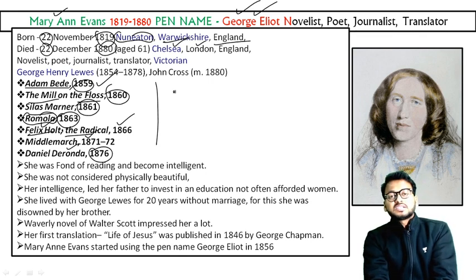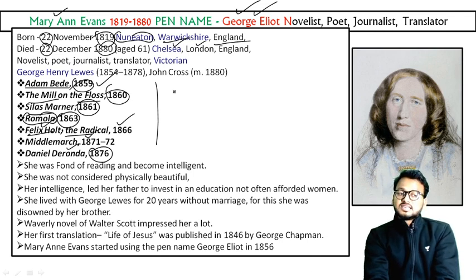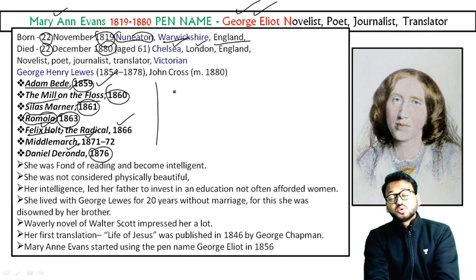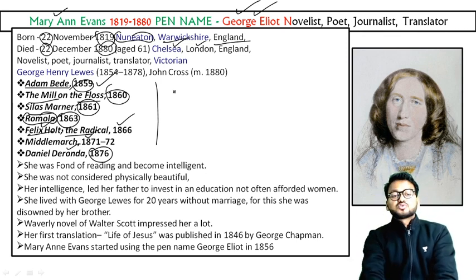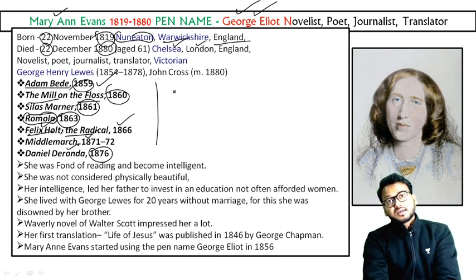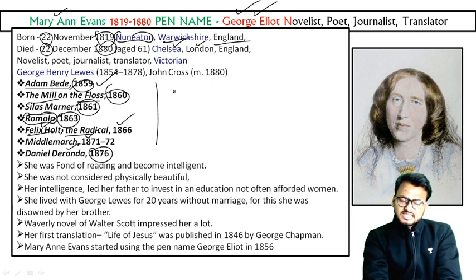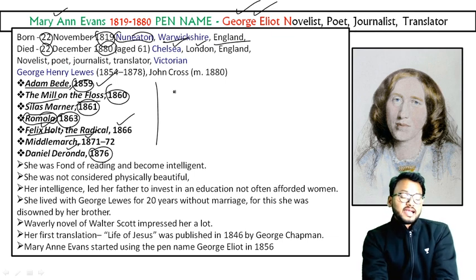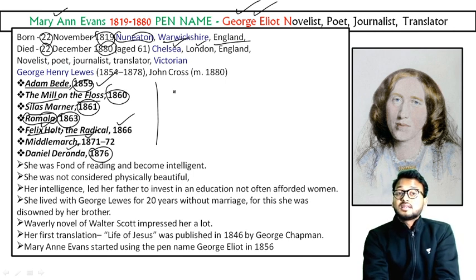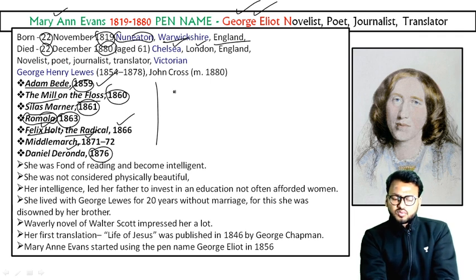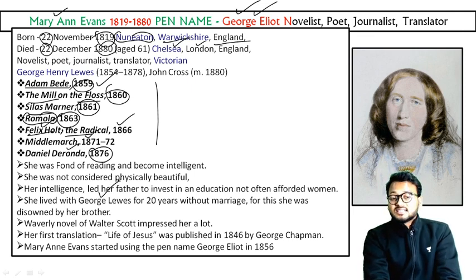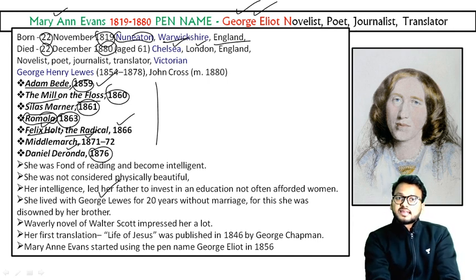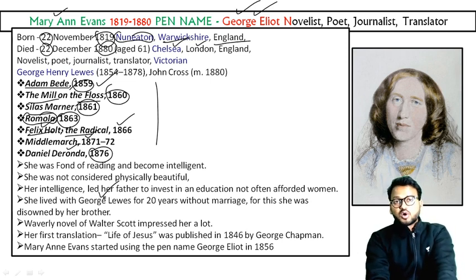Her father, who was not very rich, was always focusing on her studies and supported her greatly in getting a better education. Her being considered not very beautiful led her to become mentally strong. Her intelligence led her father to invest in her education, which at that time in Victorian England was not affordable for women. She was also living with her close friend George Henry Lewes for more than 20 years, and later she married him.